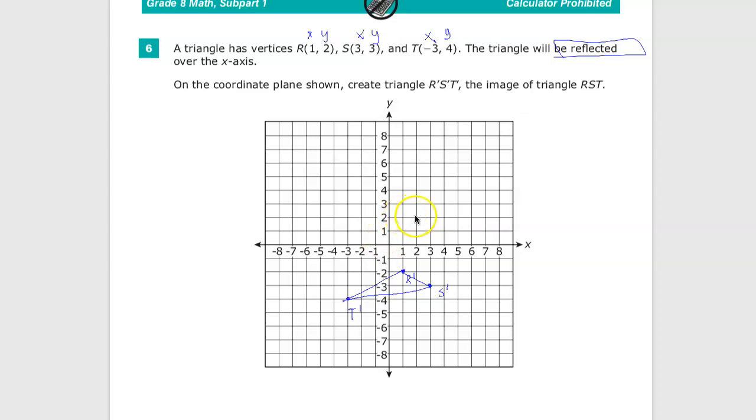One thing that you should notice is that the x values didn't actually change at all. This is still at x of three, it's just at negative three. This is still at one, it's just at negative two. And this is still at negative three, it's at four. Well, we reflected it over the x-axis. So the x values don't actually change. It's only the y values that change.